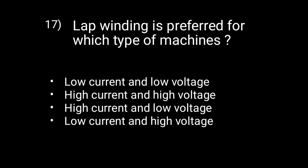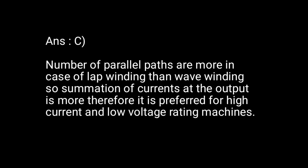Question 17: Lap winding is preferred for which type of machine? Option C is correct — high current and low voltage. In lap winding, the number of parallel paths is more than in wave winding, so the summation of current at the output is more. Therefore, it is preferred for high current and low voltage rating machines.